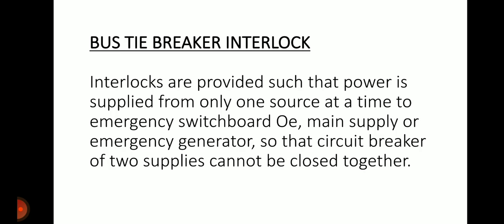The tie breaker is provided in the bus bar with interlocks so that power is supplied from only one source at a time. You cannot run from the main generator and emergency generator simultaneously. This bus bar tie breaker ensures only one source — main supply or emergency generator — is active at a time. If both circuit breakers were closed simultaneously, a total blackout would occur from which recovery is not possible. With this interlock technique, when the main supply fails, the emergency generator can be activated.